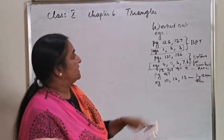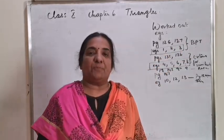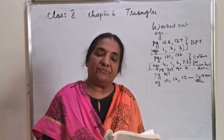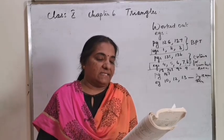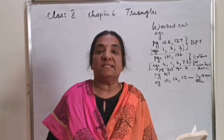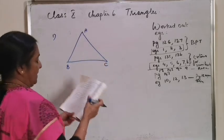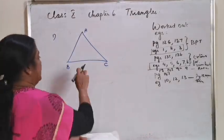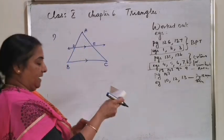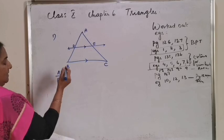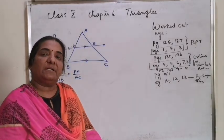The first worked examples are on pages 126 and 127. Examples 1, 2, and 3 are based on basic proportionality theorem. By reading the question, I will draw the figure, and for the proof you can refer to the textbook — I will explain the proof. If a line intersects the sides AB and AC of a triangle ABC at D and F, and is parallel to BC, that means DE is parallel to BC. Prove that AD by AB is equal to AE by AC.